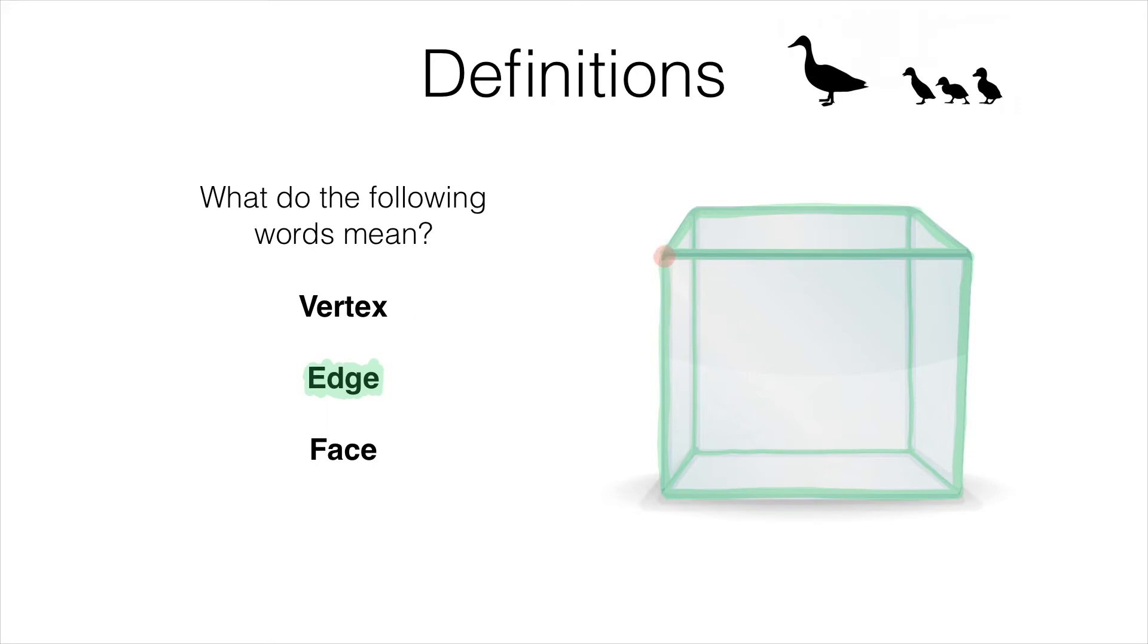This cube has got seven more vertices. Remember, vertices is simply the plural of vertex.